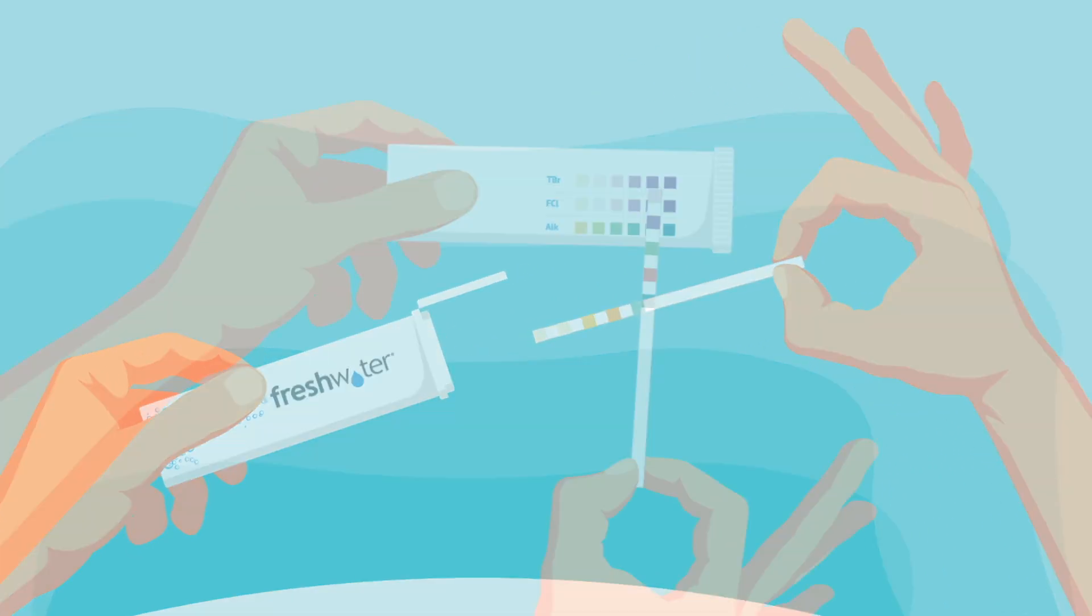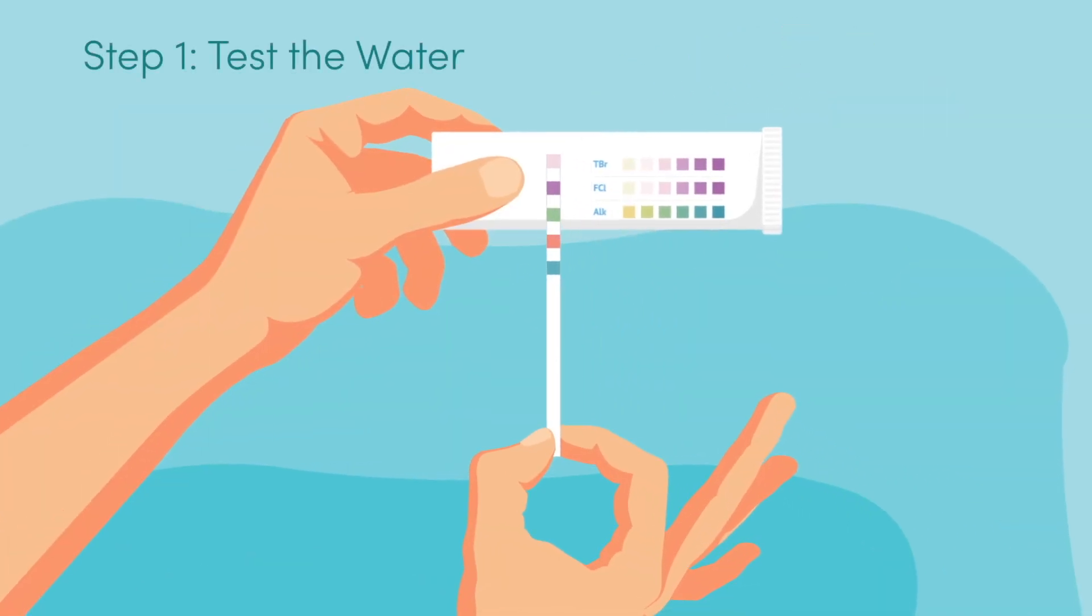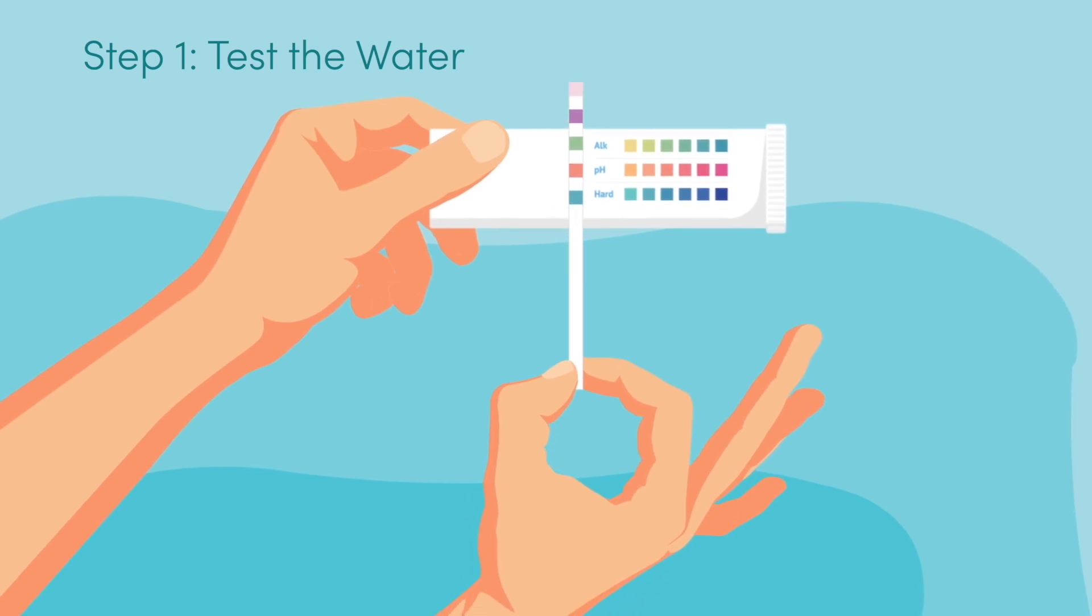Step 1: Test the water in your hot tub with a freshwater five-way test strip to determine the alkalinity level.